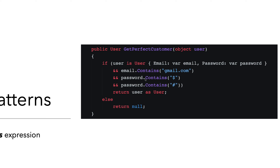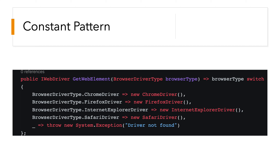Var patterns are another amazing feature that can be used along with the is expression. You create a local var variable — for example var email and var password — within the named parameter. For the user, even though we have a parameter called email, we create a local var variable usable within the method. You can then verify email.contains gmail, password.contains dollar or hash, then return the user as user, or return null. This is var pattern matching with is expression.